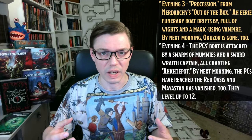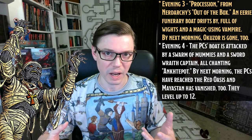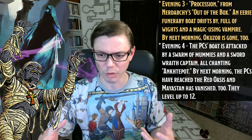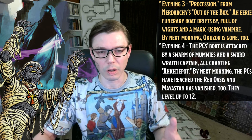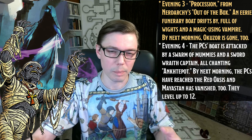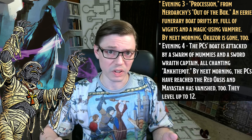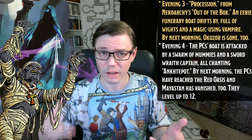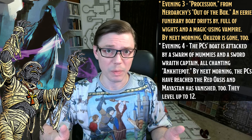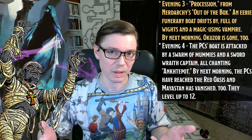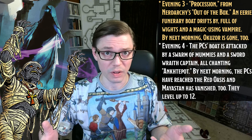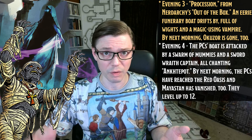During their fourth and last evening on the Eternal River, the PCs' boat will get attacked by a swarm of mummies commanded by a sword-wraith captain, all chanting 'Anctepat, Anctepat' — the name of the pharaoh — as they attack. Assuming the PCs win, they take another rest, and Maestan, the last NPC ally, will have vanished by the time they wake up. At that point, the PCs arrive in the Red Oasis and level up to twelve.